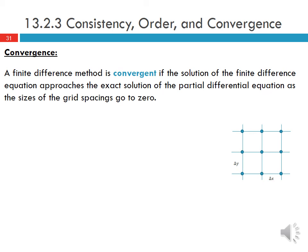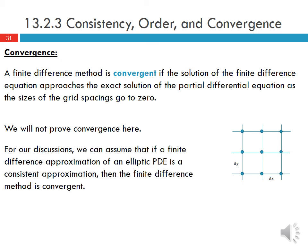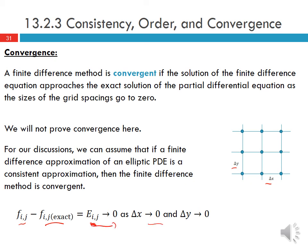Finally, a finite difference method is convergent if the solution of the FDE approaches the exact solution of the PDE as the grid spacing goes to zero. For our purposes, we can assume that if a finite difference approximation of an elliptic PDE is consistent, then the method is convergent. The difference between the approximation and the exact solution defines some error, and if this error goes to zero as the grid spacing goes to zero, the method is convergent.